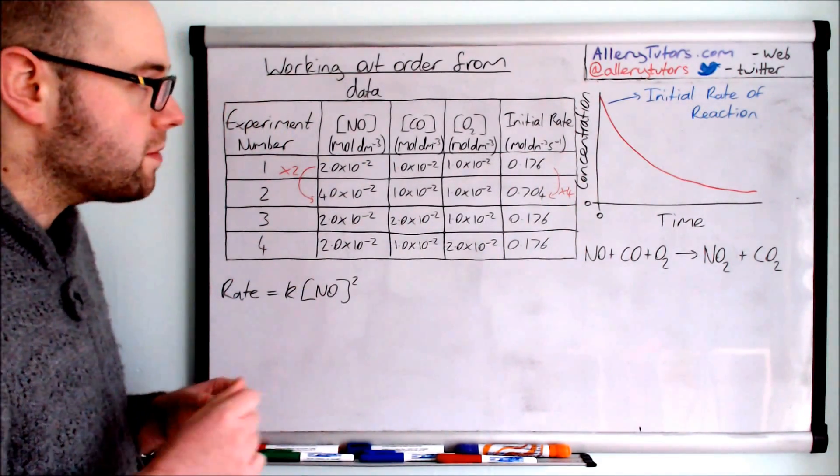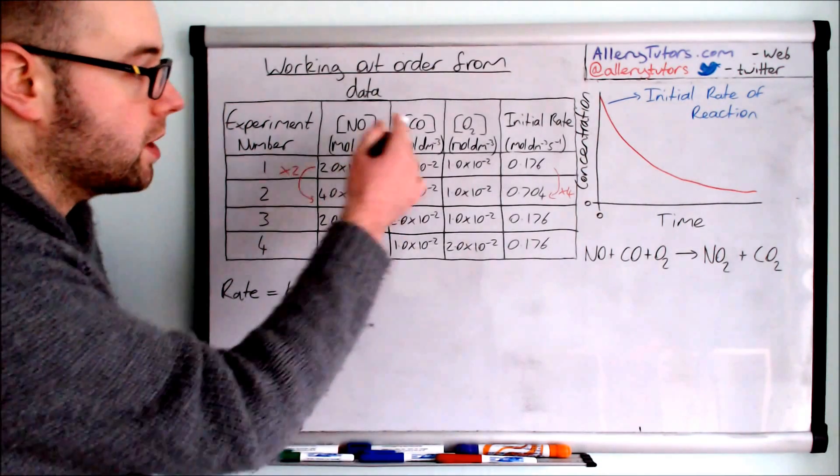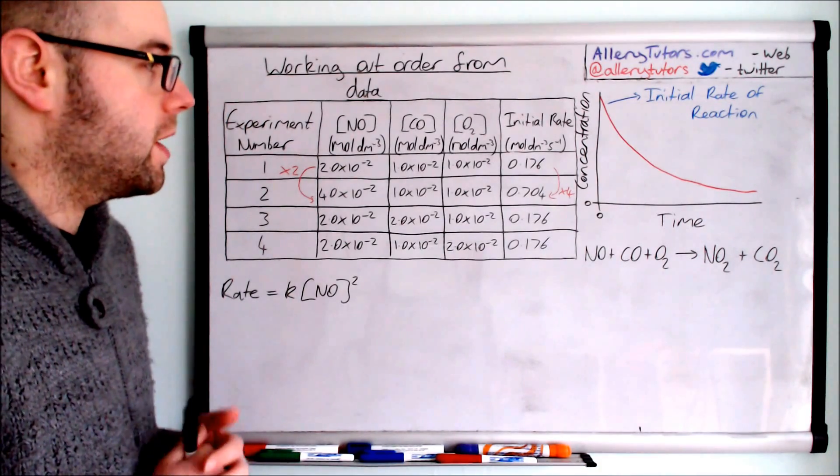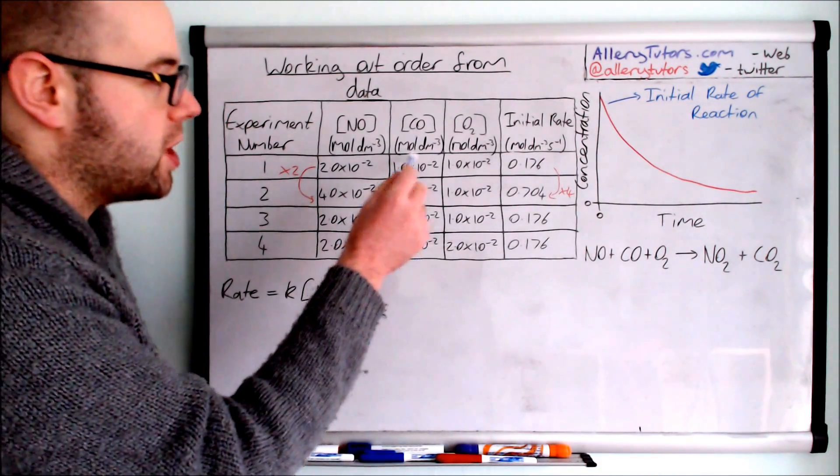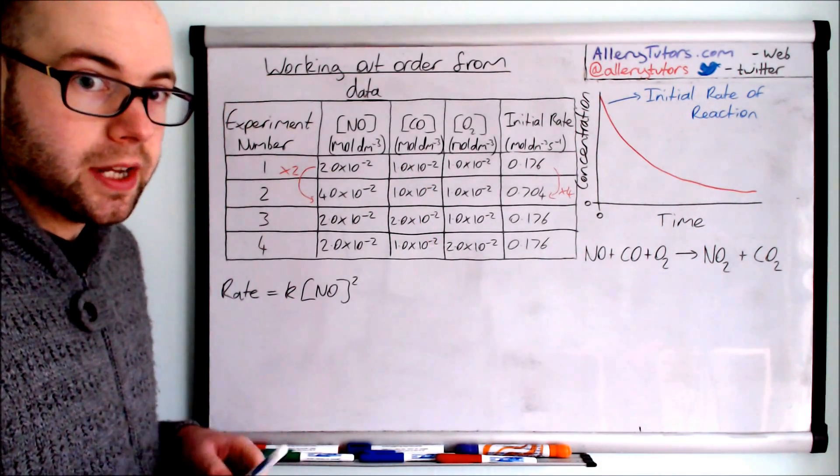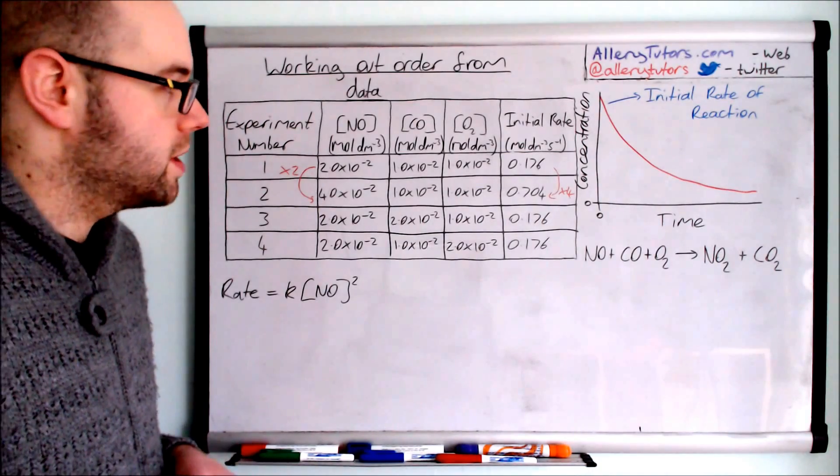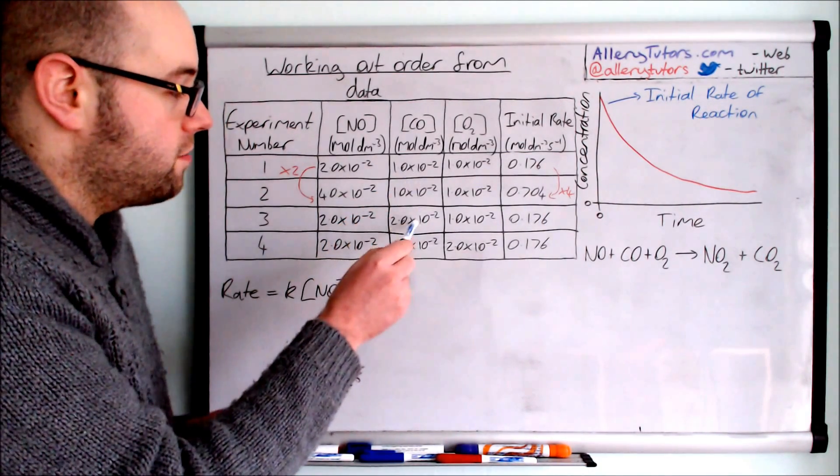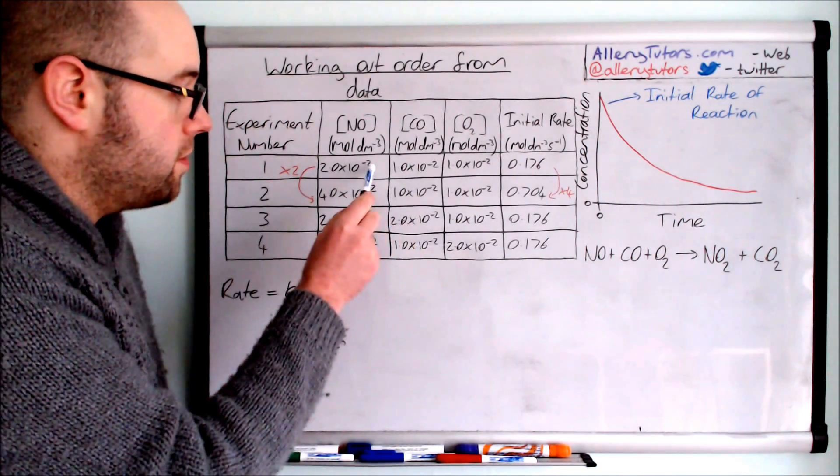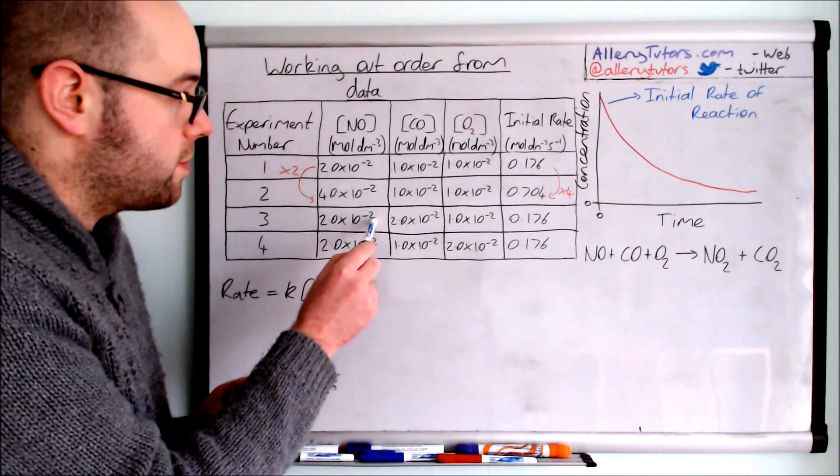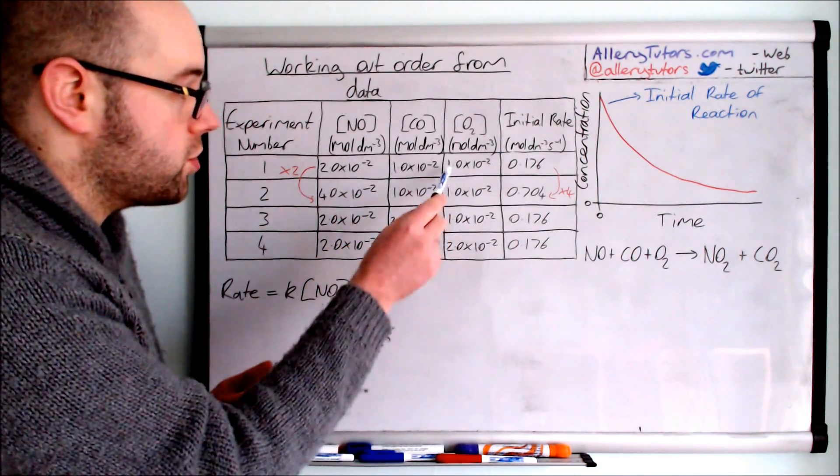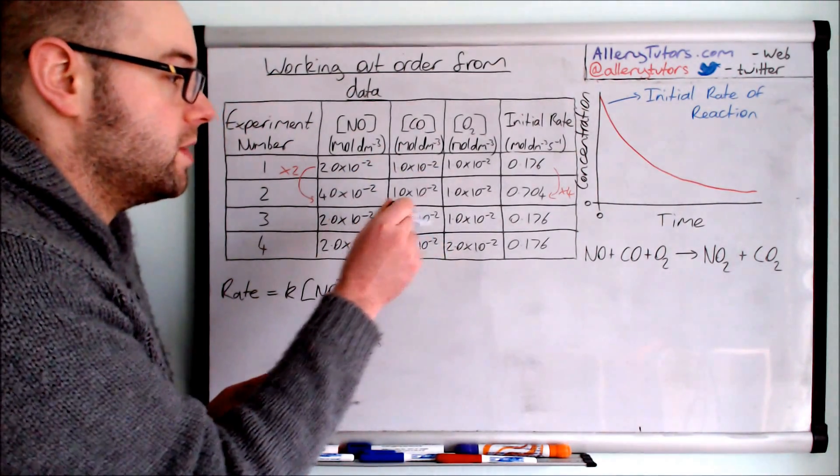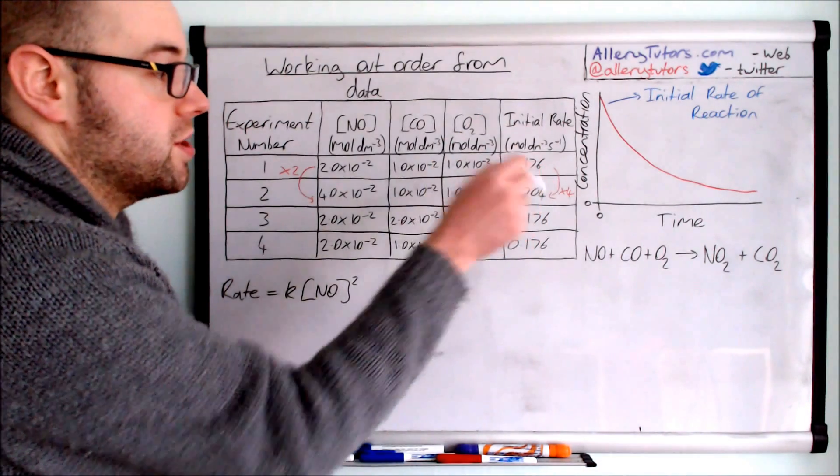Now we're going to look at the next one, carbon monoxide. Again we're looking for an area where we're changing the concentration of carbon monoxide but the rest remain constant. If you're looking at this table you can see that here we've got a doubling of carbon monoxide but crucially the amount of NO remains the same and the amount of oxygen remains the same. So any changes in concentration of carbon monoxide we can detect.